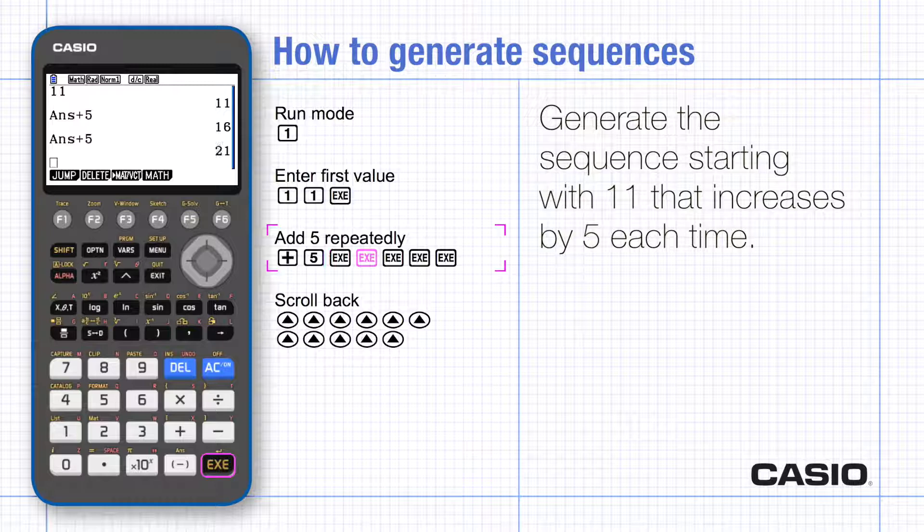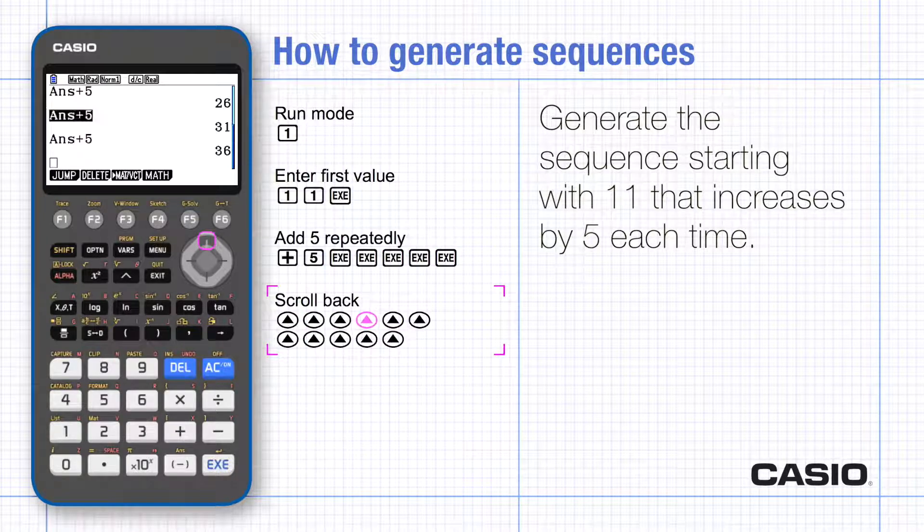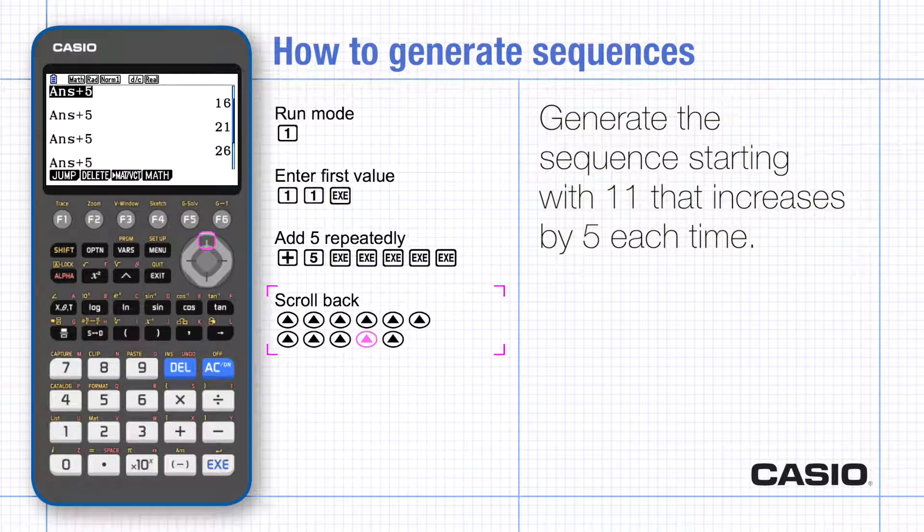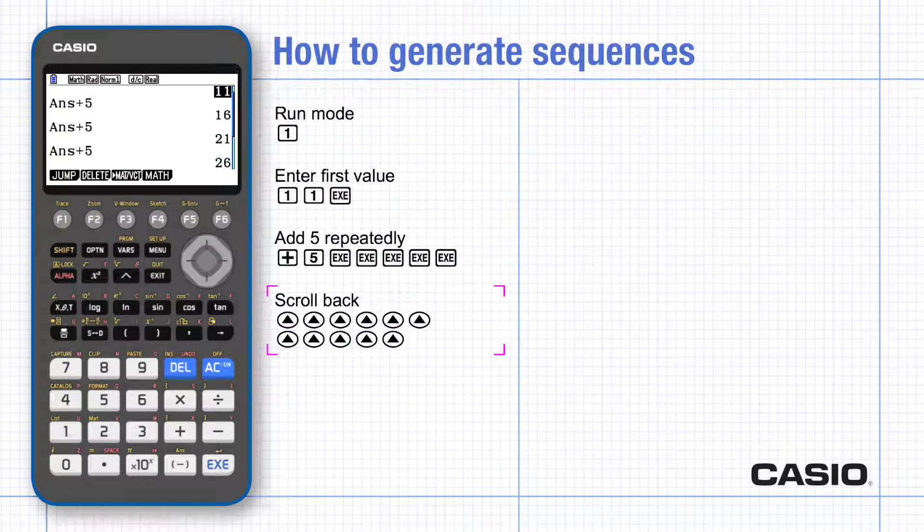Type add 5 and the display shows answer plus 5. Press execute as many times as you need. If you go too far, you can always scroll back up the list of answers to see the previous ones.